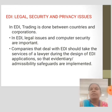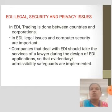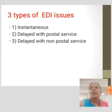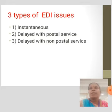EDI legal, security, and privacy issues: in EDI, trading is done between countries and corporations. Legal issues and computer security are important. Companies that deal with EDI should take the service of a lawyer during the design of EDI applications so that evidentiary admissibility safeguards are implemented. There are three types of EDI issues: incidents delay with postal service; delay with non-postal service; and if the parties are face to face or use an instantaneous communication medium such as telephone. Delayed with postal service: the mailbox rule provides that an acceptance communicated via postal service mail is effectively communicated when dispatched or physically posted.